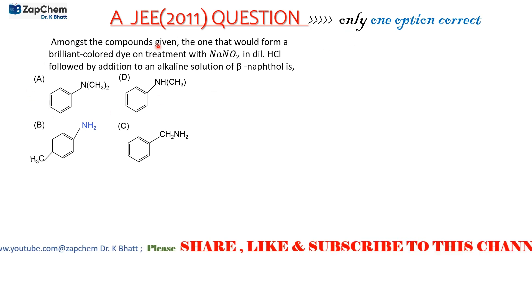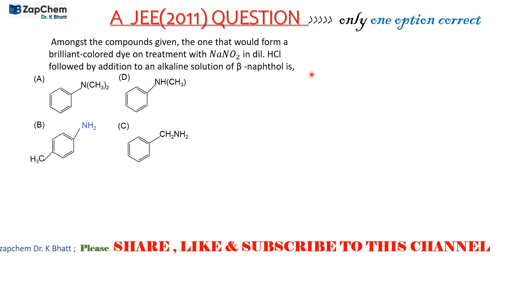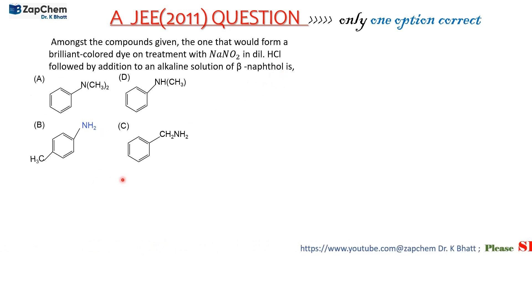Among the compounds given, the one that would form a brilliant colored dye on treatment with sodium nitrite in dilute HCl, followed by addition to an alkaline solution of β-naphthol is - and four options are given here.